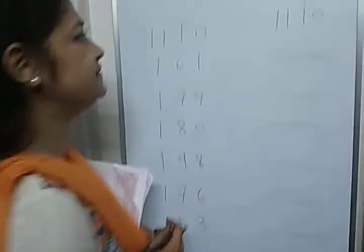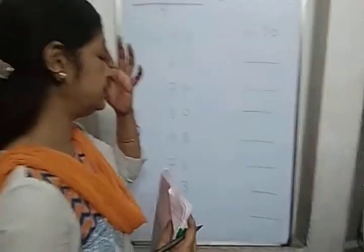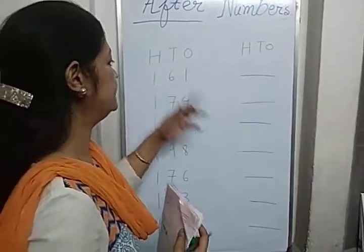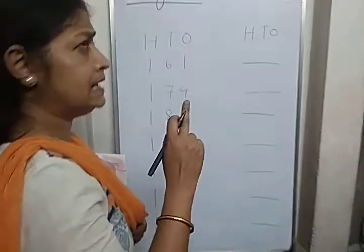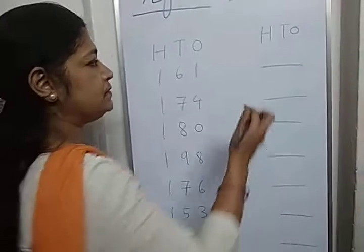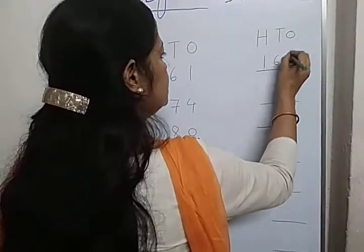Now, after number is very simple. Simple counting, you just remember. One hundred sixty-one. One hundred sixty you just count. We remember one hundred sixty, one hundred sixty-one, then one hundred sixty-two.